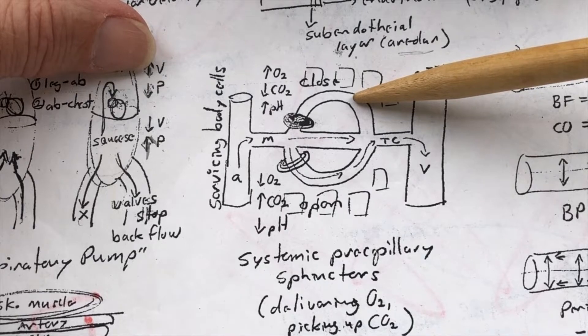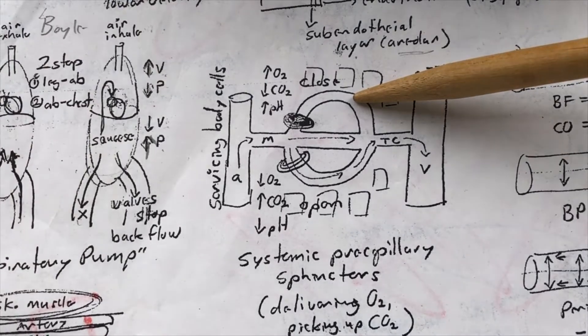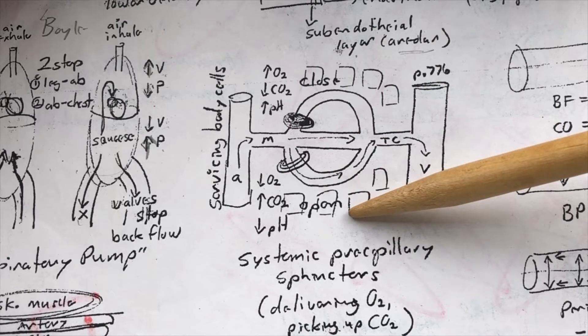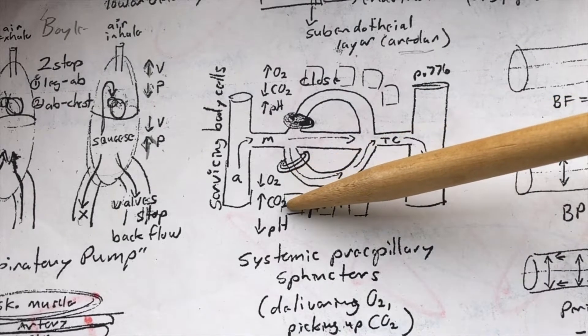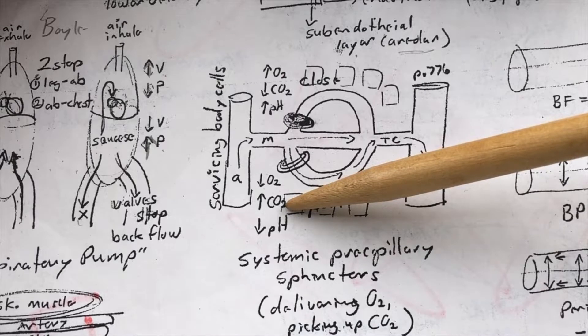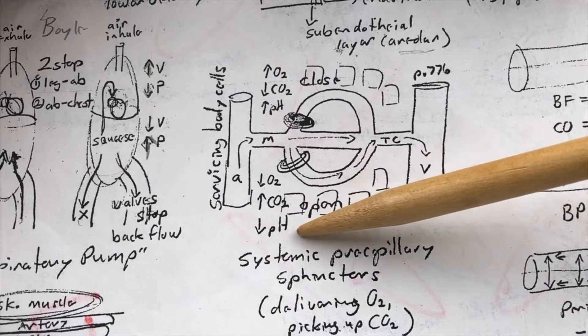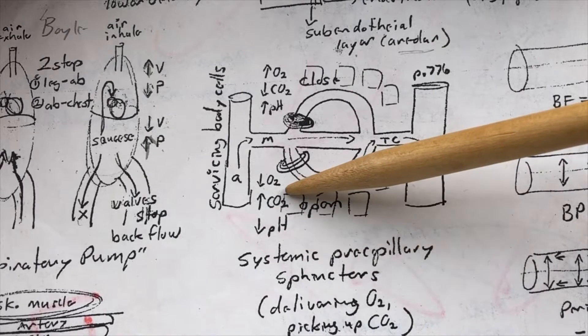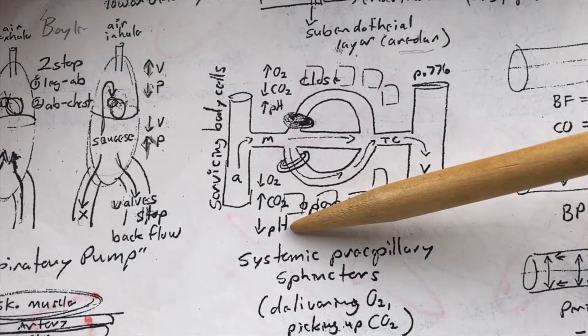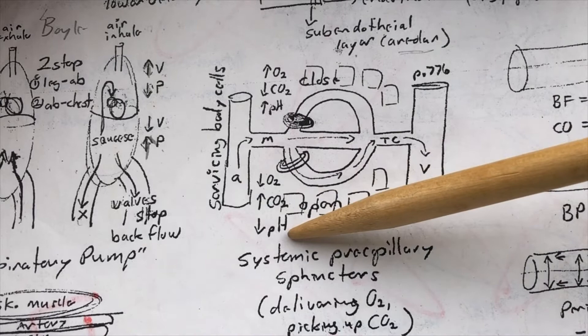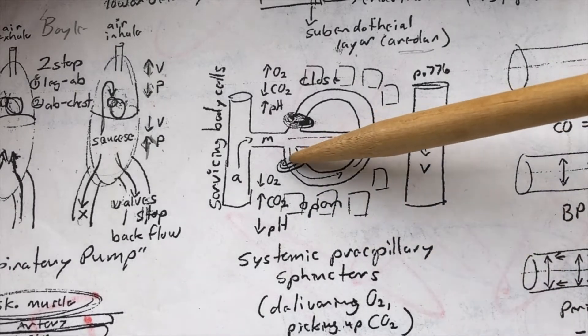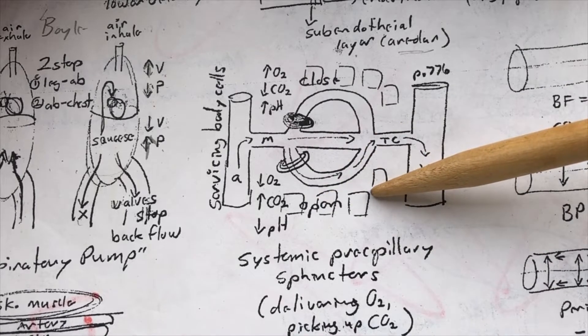And you have a limited amount of blood and you have to choose carefully where it's going to go. Well, down here, let's say here are some busy cells. And these busy cells will be using the oxygen, producing the carbon dioxide. And because there's higher levels of carbon dioxide, there'll be more acid. The pH will go down. So, low oxygen, high carbon dioxide, and low pH are chemical conditions to cause systemic pre-capillary sphincters to open. Again, saying that these cells deserve that blood.